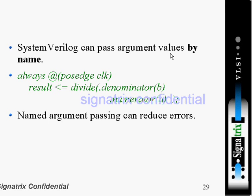SystemVerilog can also pass argument values by name. In Verilog we have to pass by position, but here it is also possible to pass by name — similar to module port connection by name or by order. In Verilog, when connecting ports, we can either connect by using the position of the ports or by using the name. Here the same concept applies: divide.denominator = b, divide.numerator = b — we are passing values with respect to name.